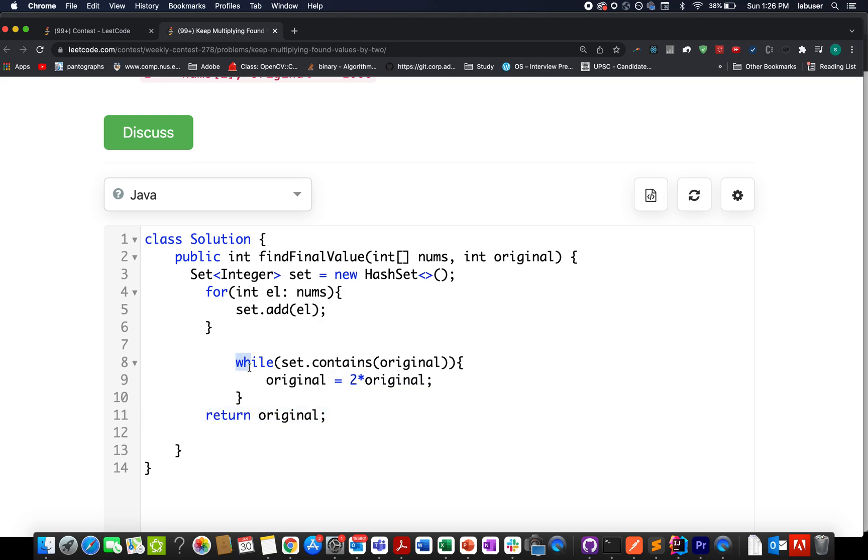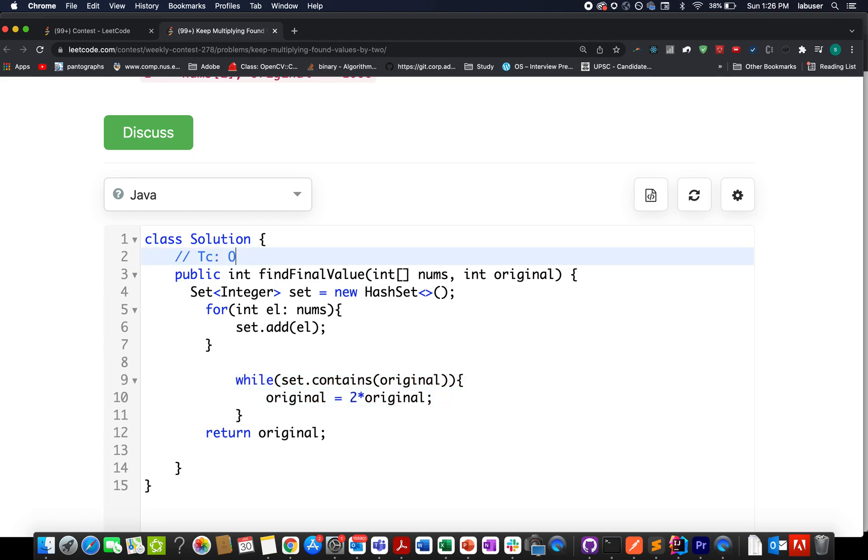So the time complexity of this approach in the worst case can be equal to the total number of elements that are present in my input array. Because there could be a case that up till all the possibilities of nums, we are getting the original value present in this set.